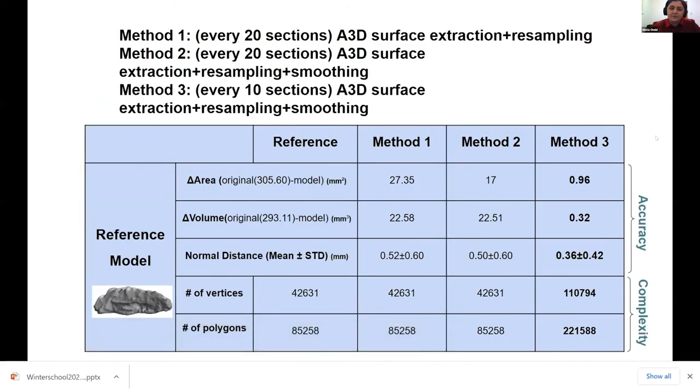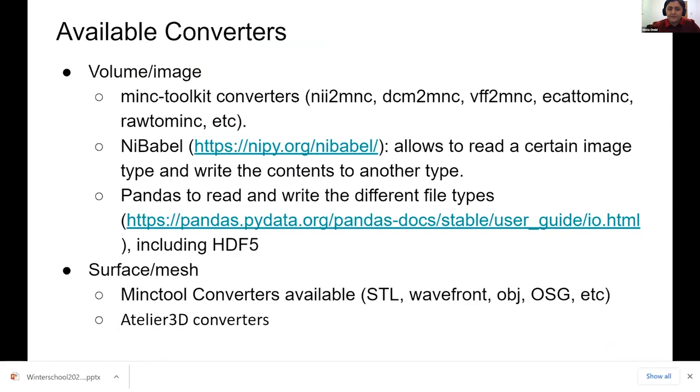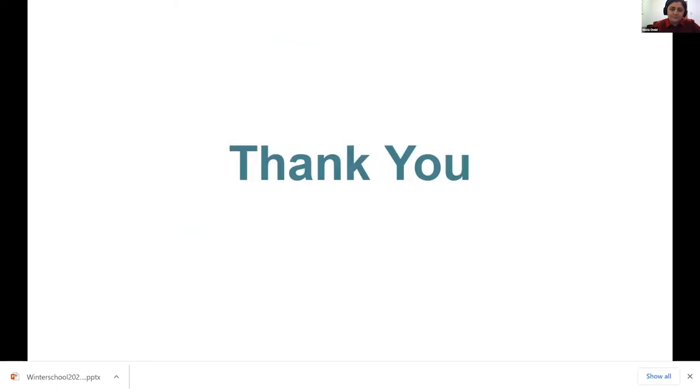And if you want to know more about the methods I have used to show the results, the method one uses every 20-section slide label maps, and only resampling was applied. And in method two, I have applied smoothing too. And method three, I have increased the resolution in terms of 2D label maps, and also applied the resampling and smoothing. There are available converters, and our code will be available, as well as the dataset, to be used by other groups. Thank you.